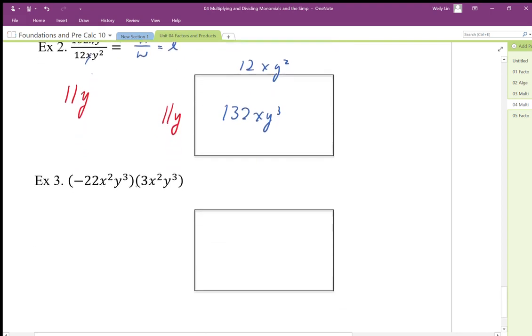Here I'm gonna multiply this out, so negative 22 times 3 is negative 66. x² times x² gives me x to the power of 4. y³ times y³ gives me y to the power of 6.